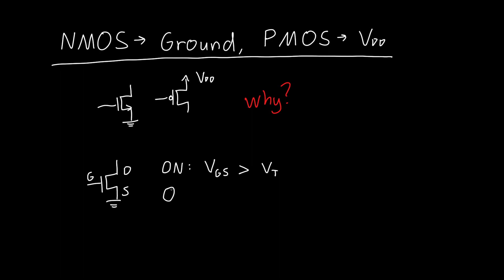The transistor is off if the gate-to-source voltage is less than the threshold voltage. For PMOS transistors, it's a very similar story. I've drawn the PMOS transistor here — and the NMOS can be drawn with or without the little arrow symbol, you'll see both conventions.